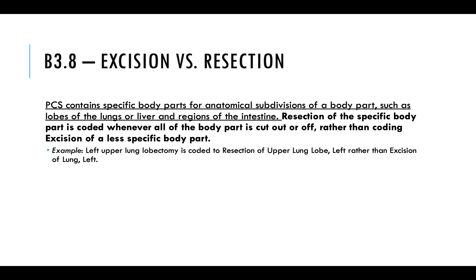Excision versus resection: Resection of a specific body part is coded when all of the body part is removed, rather than coding excision of a less-than-whole body part. This depends on your body part table — for example, taking out part of the lung (a lung lobectomy) could be coded to excision because it's part of a body part. However, because a lung lobe has its own body part character, it's actually considered the entire body part, so it must be coded to resection.